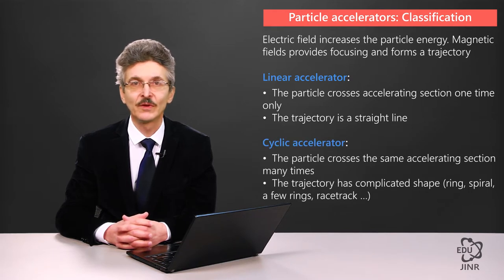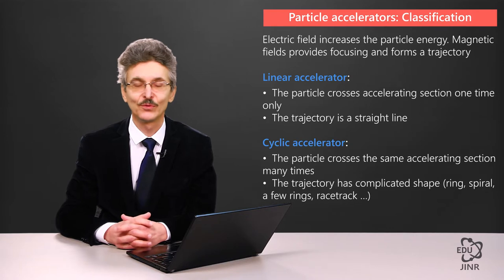The second type of accelerator is the cyclic accelerator, where a particle crosses the same accelerating section multiple times and goes back to its point of entry as a result of rotation induced by a magnetic field. The trajectory may have quite a varied shape, from a ring, an unfolding spiral, a number of rings intersecting at one point, a racetrack, a triangle, to anything really.